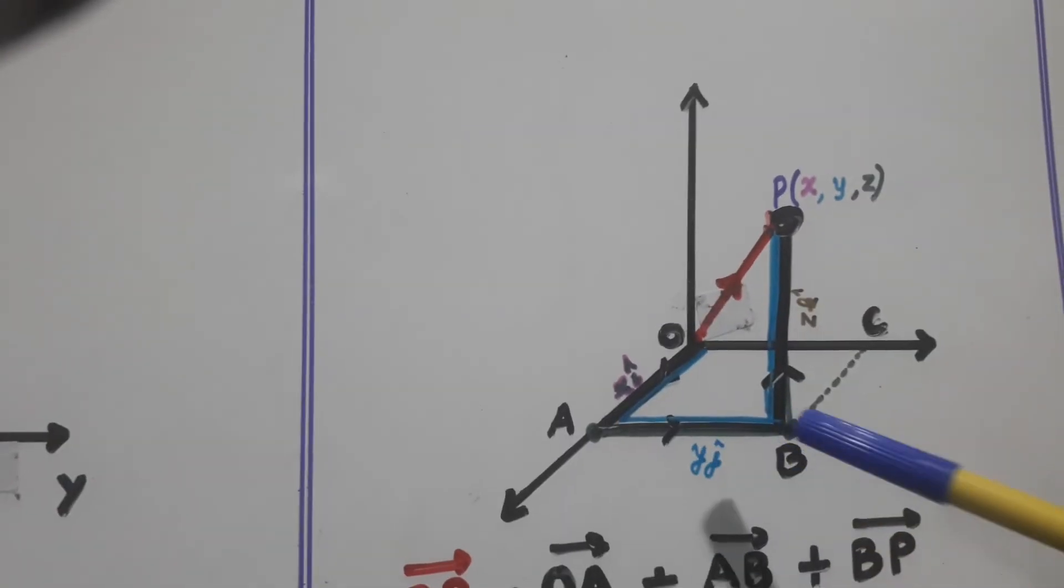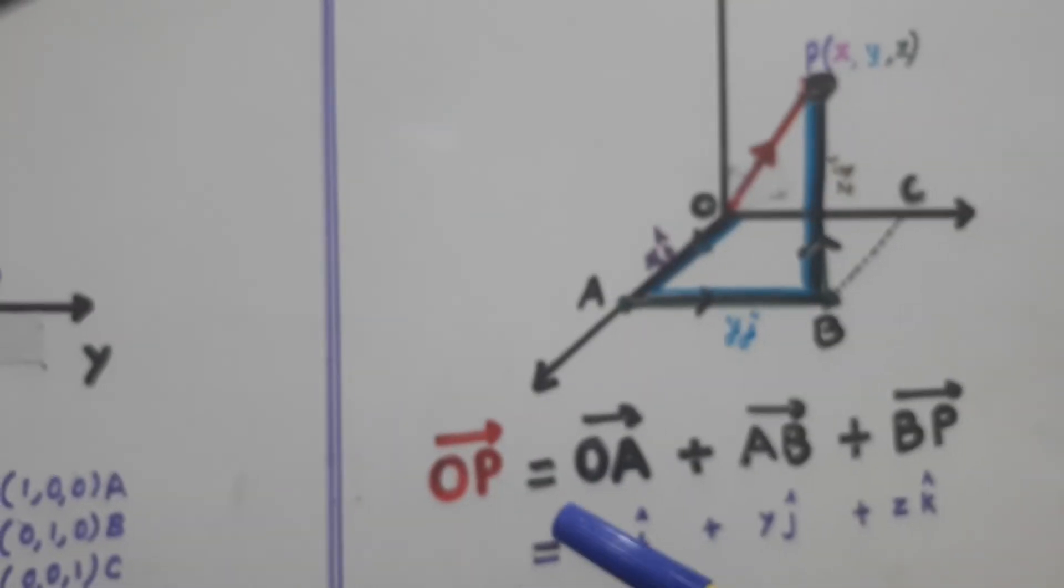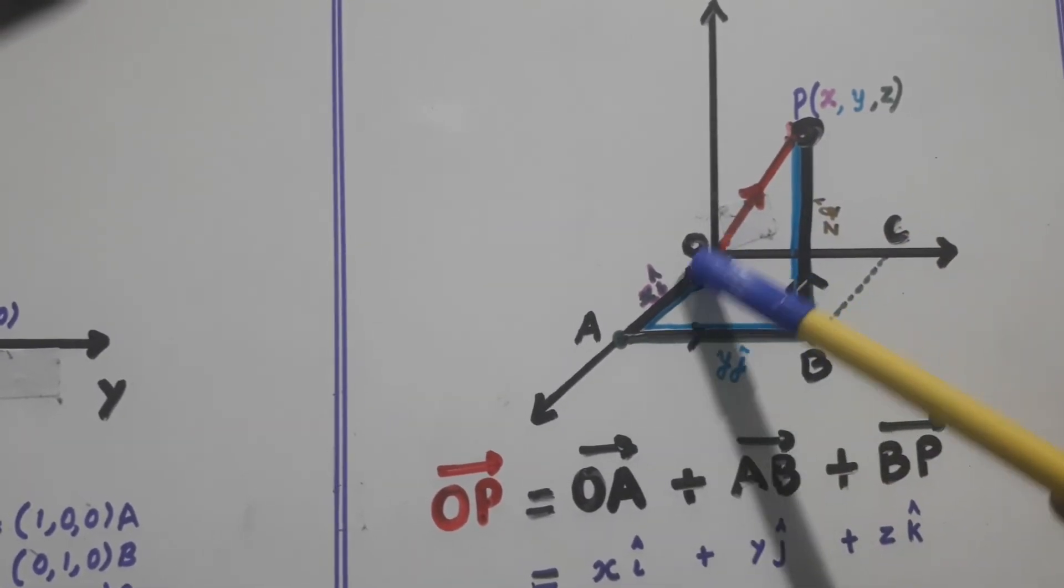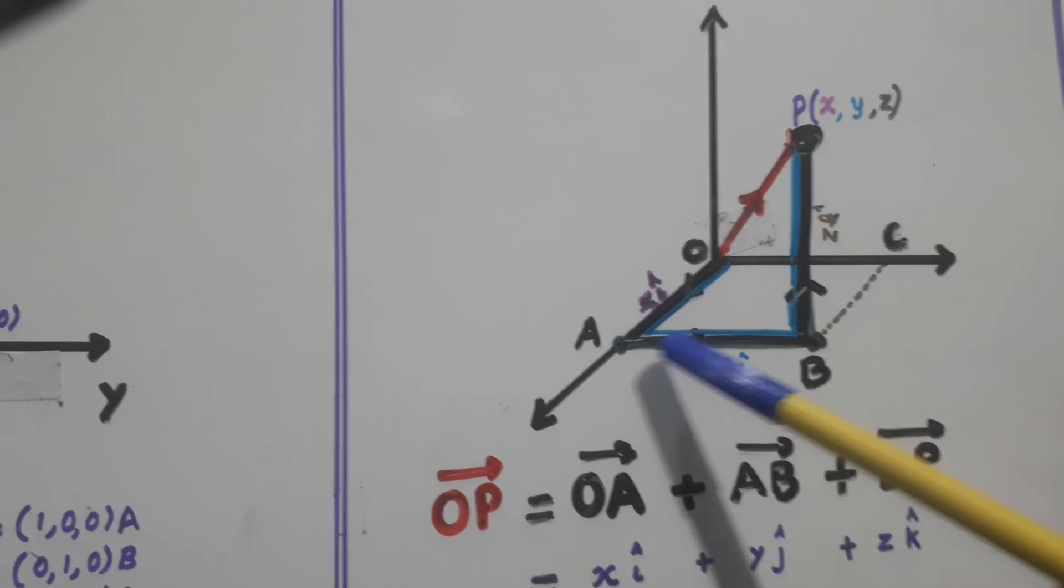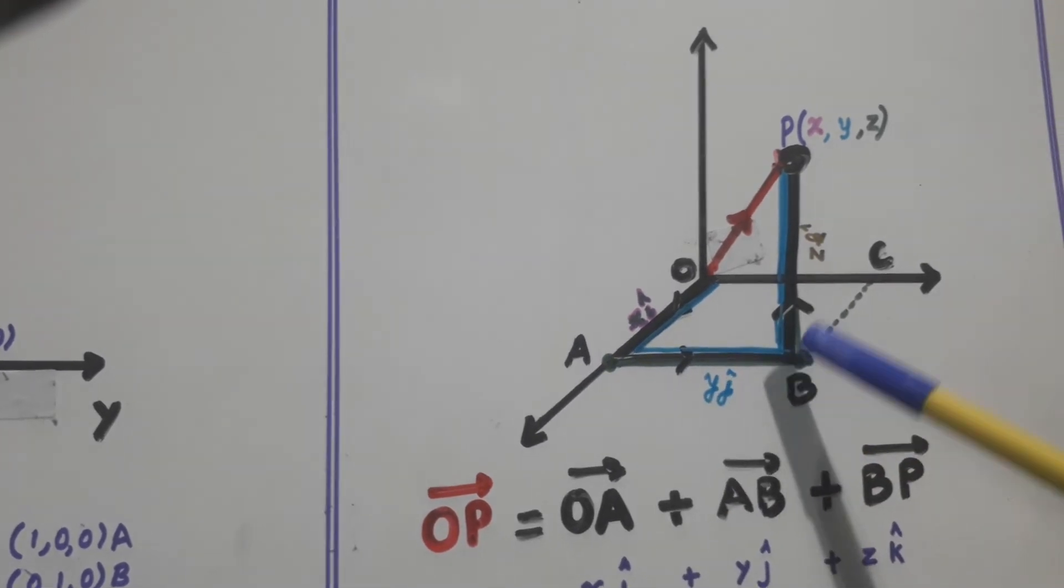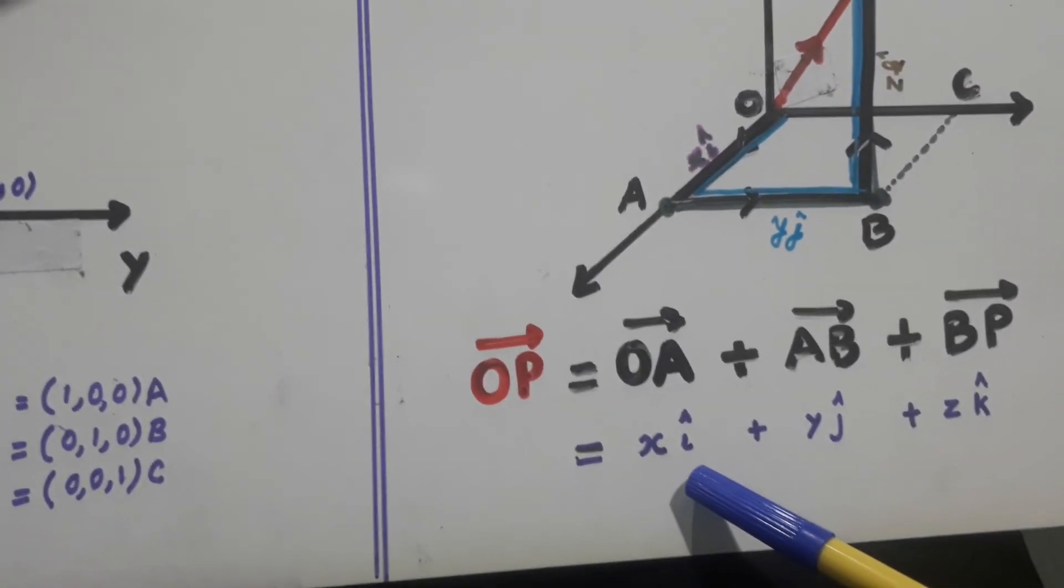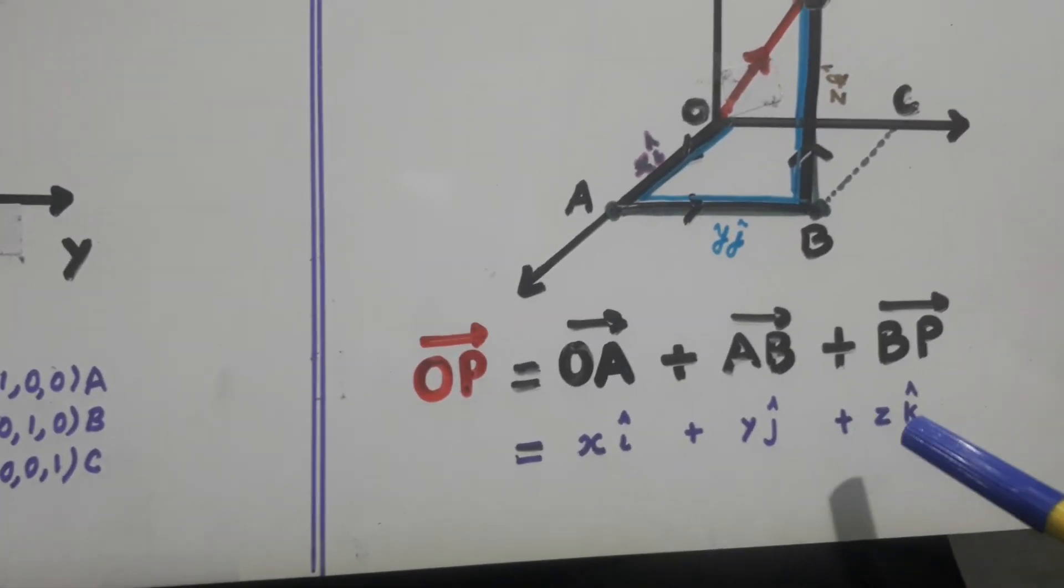So now here OP is equal to OA plus AB plus BP. So that is xi plus yj plus zk.